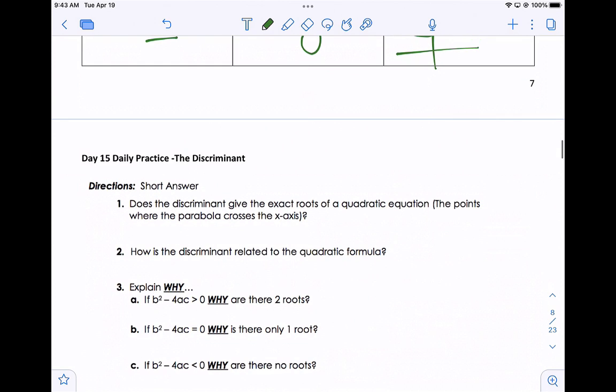So the first question says, does the discriminant give you the exact roots of a quadratic equation? It doesn't give you the answer, but it does give you the number of solutions.